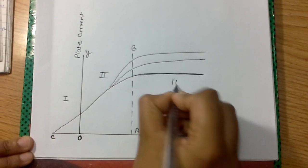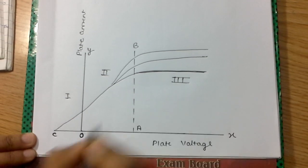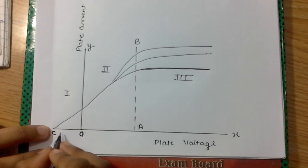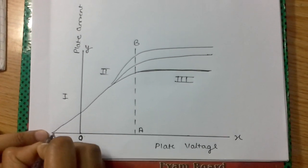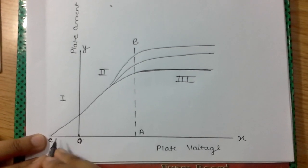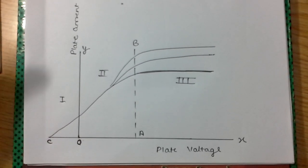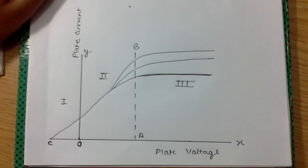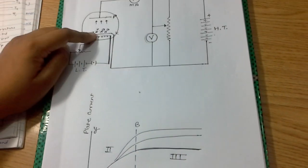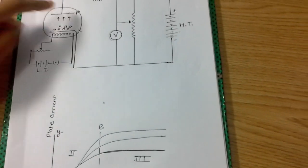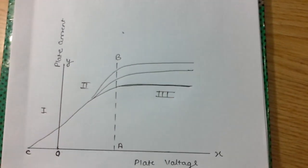In this graph we have three regions: OC, OA, and a third one. In the OC region, we find that even at some small negative potential and zero potential, there is a plate current. This happens because the cathode emits electrons and some of those electrons have high enough energy that they reach the plate, so a small amount of plate current flows.